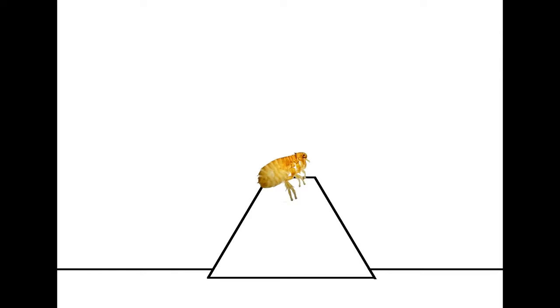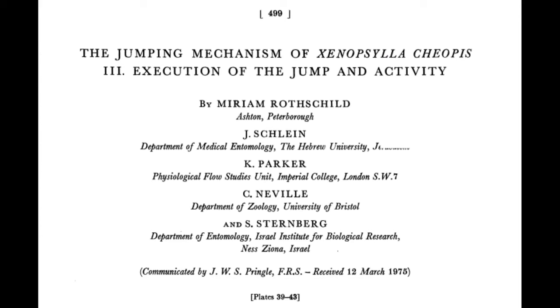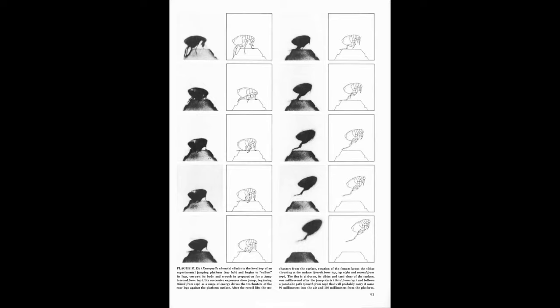By placing a perspex pyramid in a flea enclosure and focusing a high-speed camera on the summit, they were able to take detailed photos of fleas as they queued up to jump off the top. Their results are published in a great paper in Nature Reviews, which I'll leave links to in the video description. Here's a schematic of what they found.